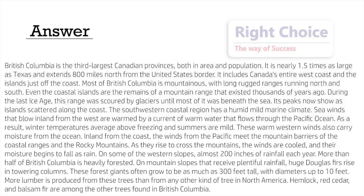British Columbia is the third-largest Canadian province, both in area and population. It is nearly 1.5 times as large as Texas and extends 800 miles north from the United States border. It includes Canada's entire west coast and the islands just off the coast. Most of British Columbia is mountainous, with long rugged ranges running north and south. Even the coastal islands are the remains of a mountain range that existed thousands of years ago.